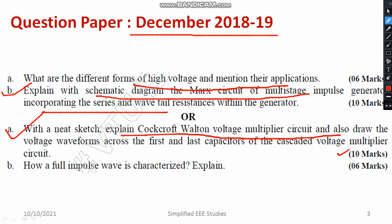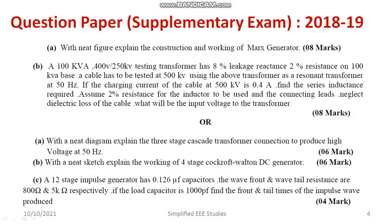All those things you have to mention very clearly. Another question is: how is a full impulse waveform characterized? What do you mean by impulse waveform? What are the parameters such as wavefront, wavetail, and peak value, and how are they obtained? That you have to mention very clearly. I have also gone through some model question papers and found the same questions.